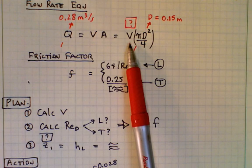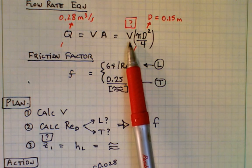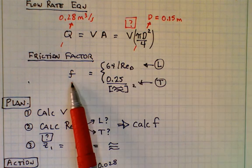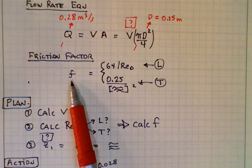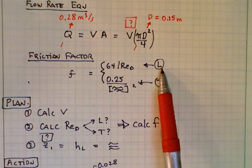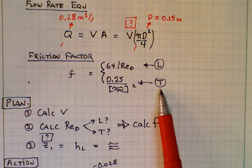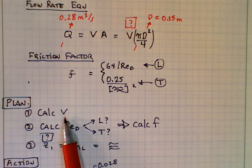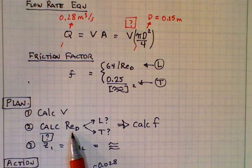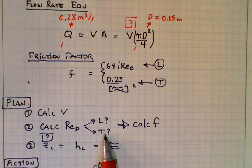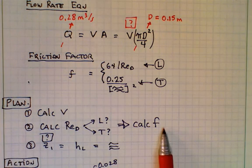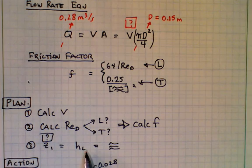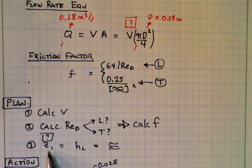We can find velocity with the flow rate equation, and then we can calculate Reynolds number once we know velocity. Then we can calculate the friction factor by using Reynolds number to decide, do we have laminar flow, do we have turbulent flow. So here's the plan. Calculate the mean velocity in the pipe, then calculate the Reynolds number, establish the flow condition, then calculate the friction factor, and then once we have the friction factor, we can calculate the head loss and solve for the problem goal.